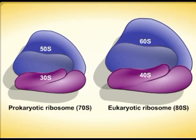S values are based on the size, shape, and weight of a particle, which accounts for why the sum of the subunits of the ribosome does not equal the S value of the intact ribosome.